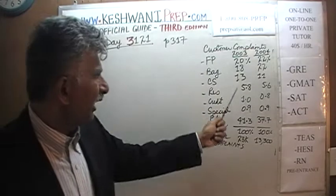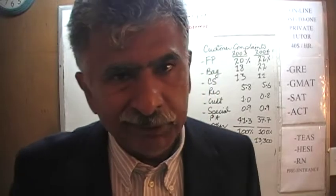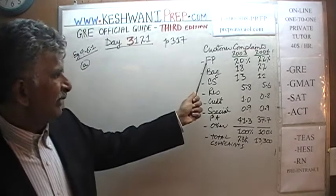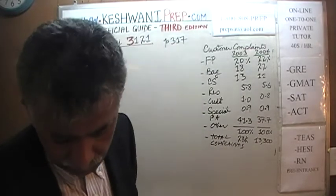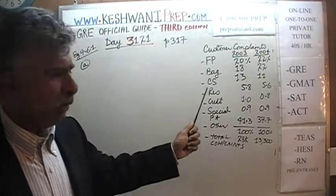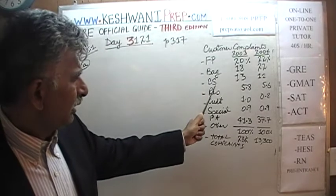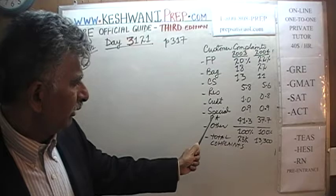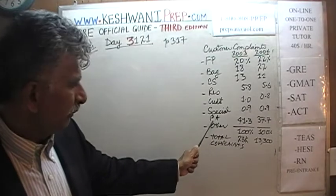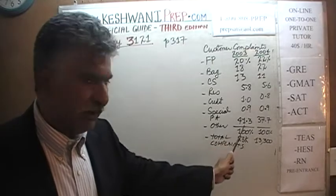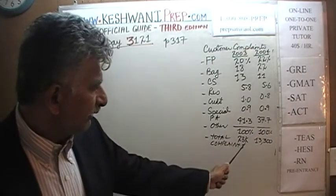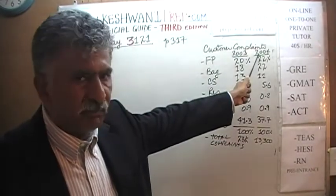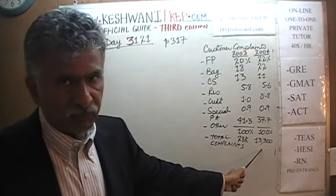In example 4.6.1 we are given a chart dealing with consumer complaints about some airline. FP stands for flight problems. The categories include: flight problems, baggage, customer service, reservation, credit, special passenger accommodation such as handicapped people, and other complaints. The total complaints received in 2003 were 23,000. Total complaints received by this airline in 2004 was about 13,000.